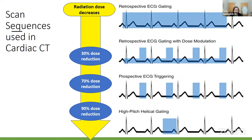There are several scan sequences to choose from. Retrospective gated studies acquire images throughout the entire cardiac cycle for multiple cycles at the same radiation dose. Retrospective gating with dose modulation acquires images throughout the entire cardiac cycle with radiation lowered during systole and higher in diastole. Prospective gated studies acquire images only in diastole over multiple cardiac cycles, with reduced radiation dose. The high-pitch helical study provides the lowest radiation dose — a single-beat acquisition where exposure can be less than one millisievert.